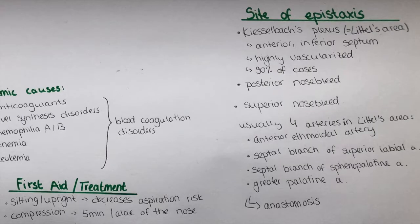Now I want to talk about the site of epistaxis — basically where the blood comes from. The most common area is Kiesselbach's plexus, also known as Little's area, and this is where 90% of cases originate from. This is located in the anterior inferior septum and it's an area which is highly vascularized.